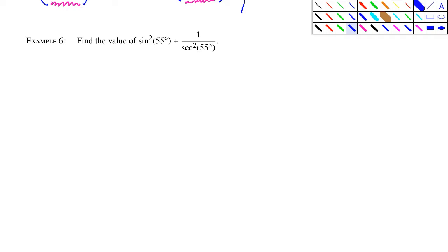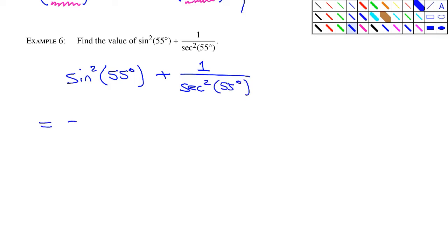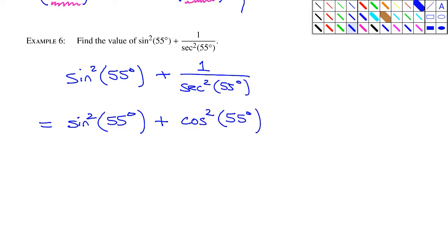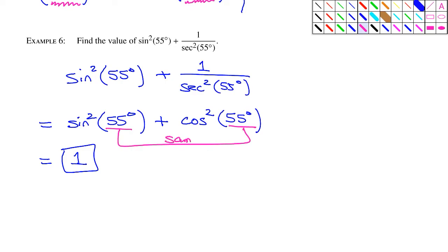Example six: find the value of sin²(55°) + 1/sec²(55°). This is a non-calculator question because it works out very nicely, even though we know nothing about 55 degrees. Leave the sine squared alone, but 1 over sec²(55°) — the reciprocal of secant is cosine — so that becomes cos²(55°). And sin²(55°) + cos²(55°) is just the Pythagorean identity, which equals 1. One key point: the angle has to be the same to use the identity — you can't mix different angles.